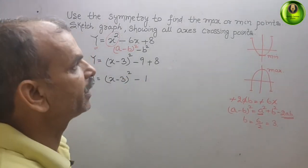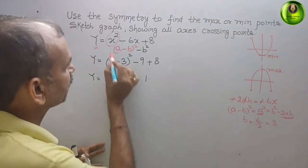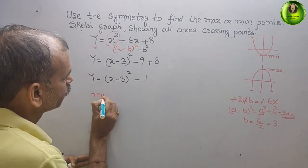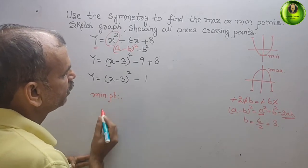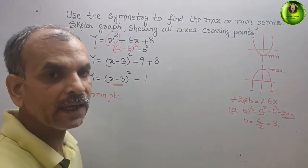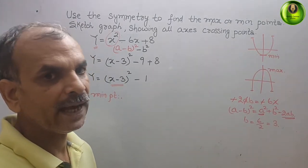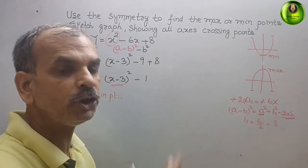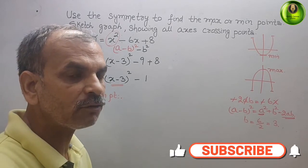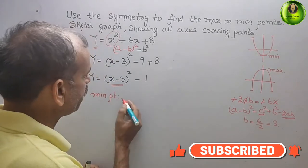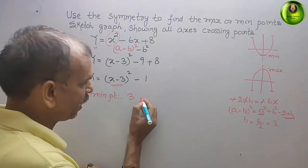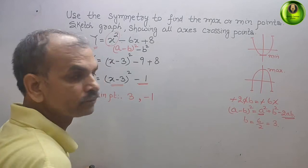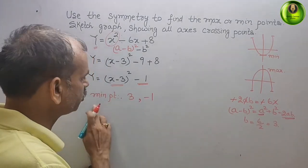Now we will find out the minimum or maximum. Since the coefficient is positive, we will get a minimum point. The minimum point's x-coordinate comes from x minus 3 equals 0, giving x equal to 3. The y-coordinate is minus 1. So the minimum point is (3, minus 1).